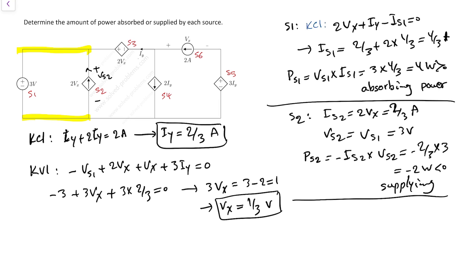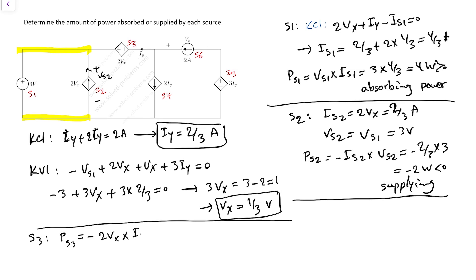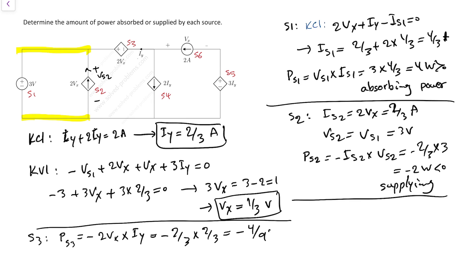For S3, the voltage across it is 2Vx and the current is Iy, but the current enters from the negative terminal, so we use negative sign convention: Ps3 equals minus 2Vx × Iy equals minus (2/3) × (2/3) equals minus 4/9 W, which is less than zero — so S3 is also supplying power.